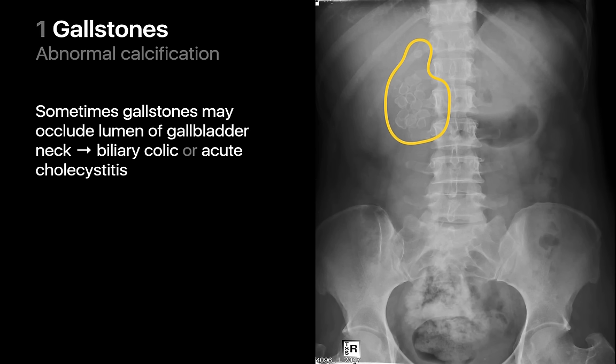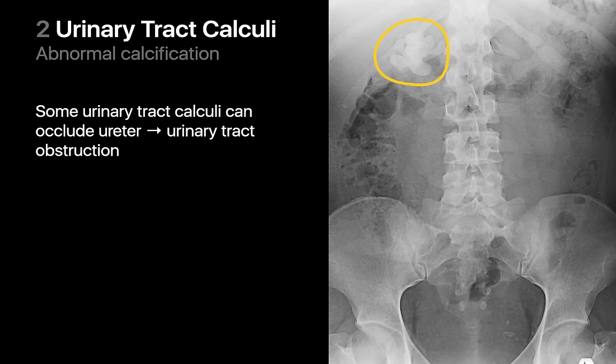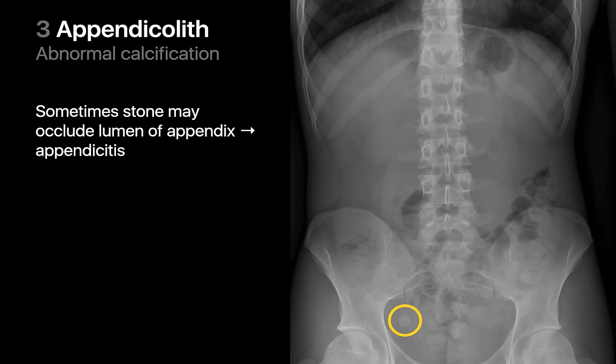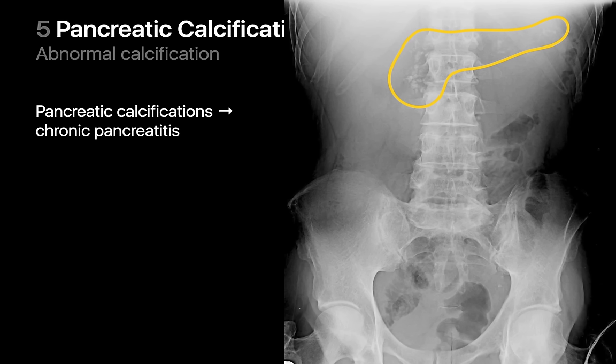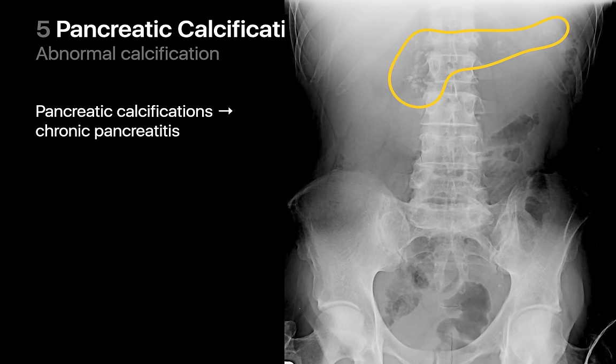Some gallstones can occlude the lumen of the gallbladder neck, leading to biliary colic or acute cholecystitis. Some urinary tract calculi can occlude the ureter, leading to acute renal colic and urinary tract obstruction. Some appendicoliths can occlude the appendiceal lumen, leading to acute appendicitis. An aortic dissection, aortic ulcer, intramural hematoma, or impending rupture could always be potentially brewing with any pre-existing abdominal aortic aneurysm. And pancreatic calcifications may indicate the presence of chronic pancreatitis.